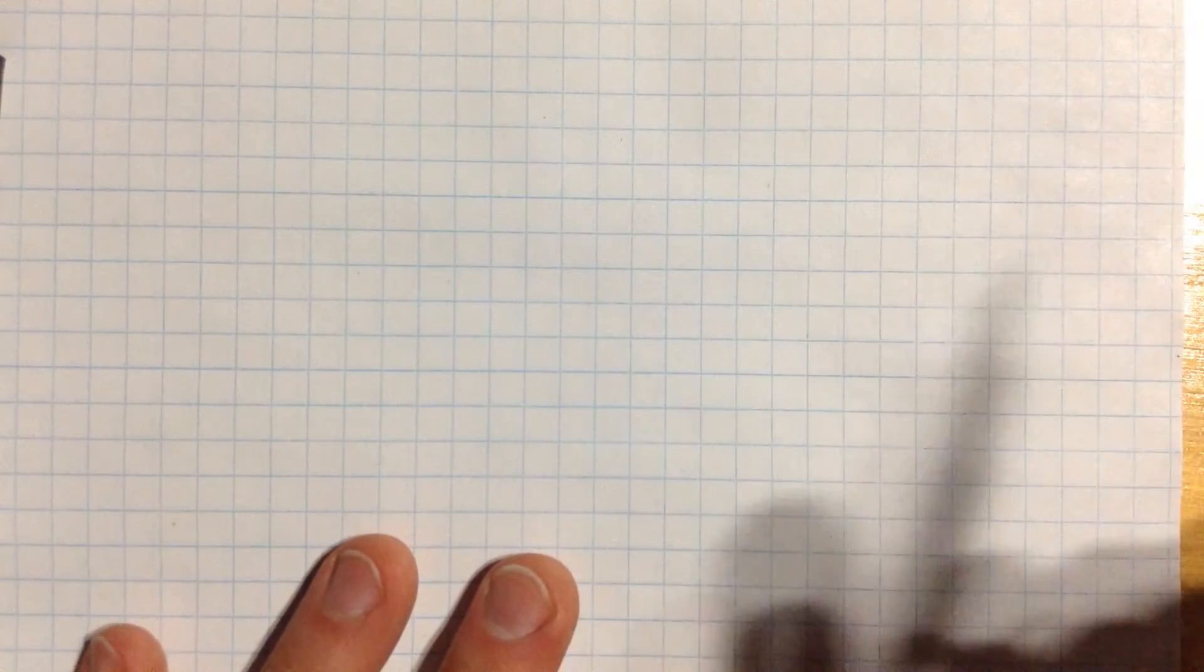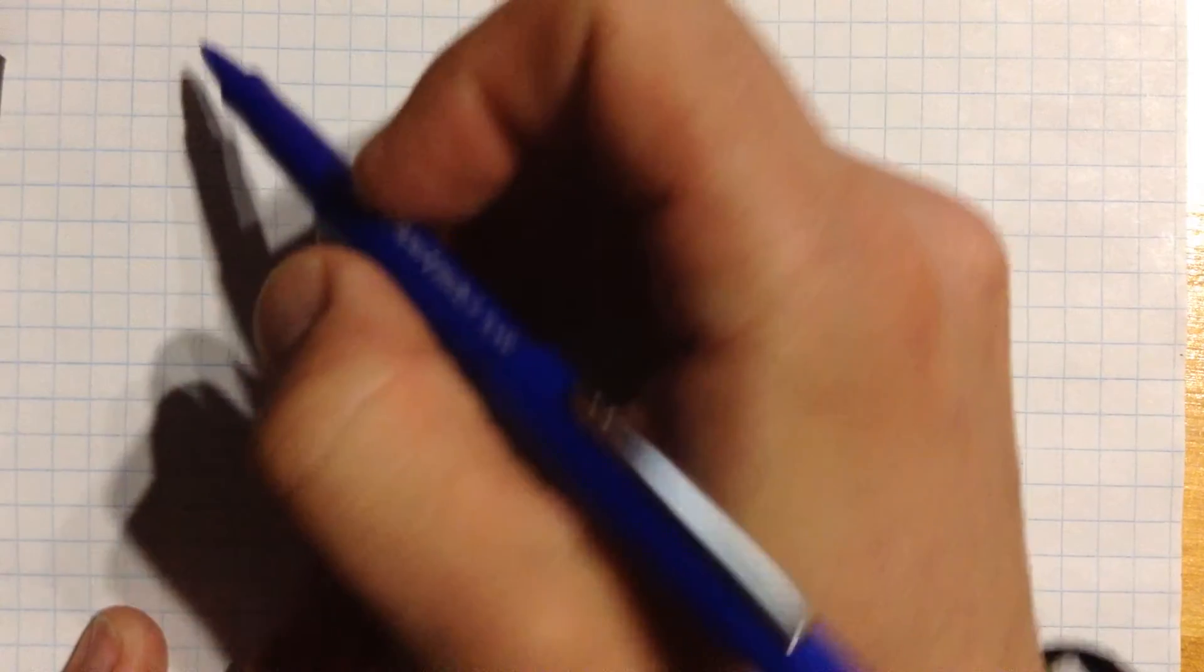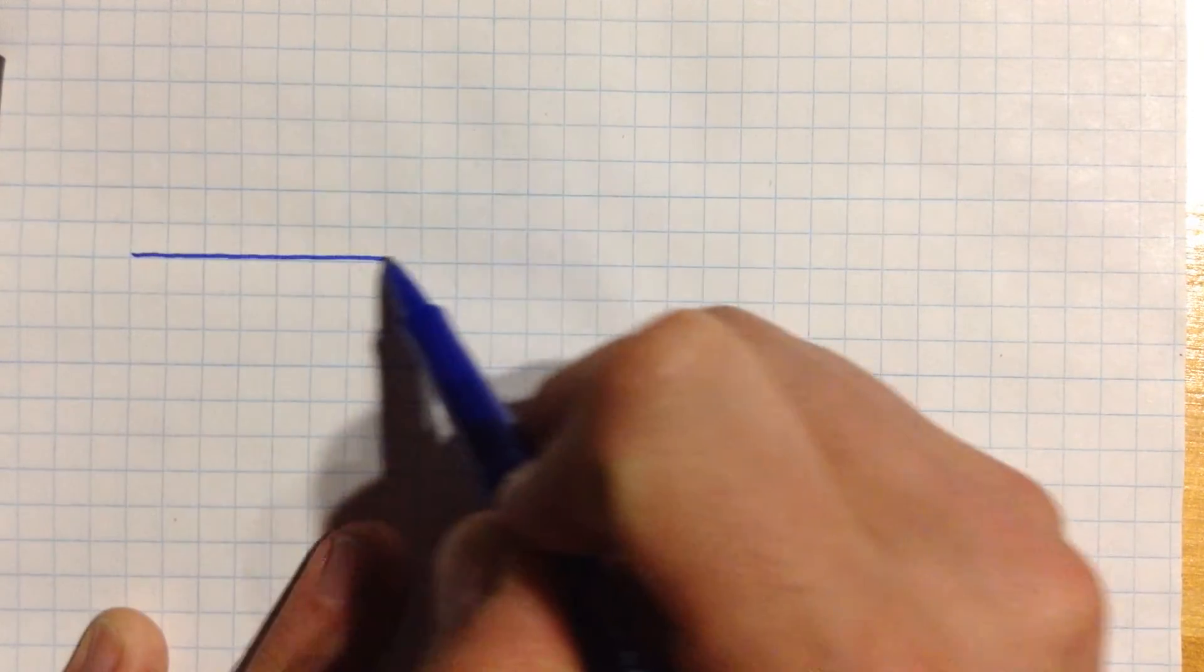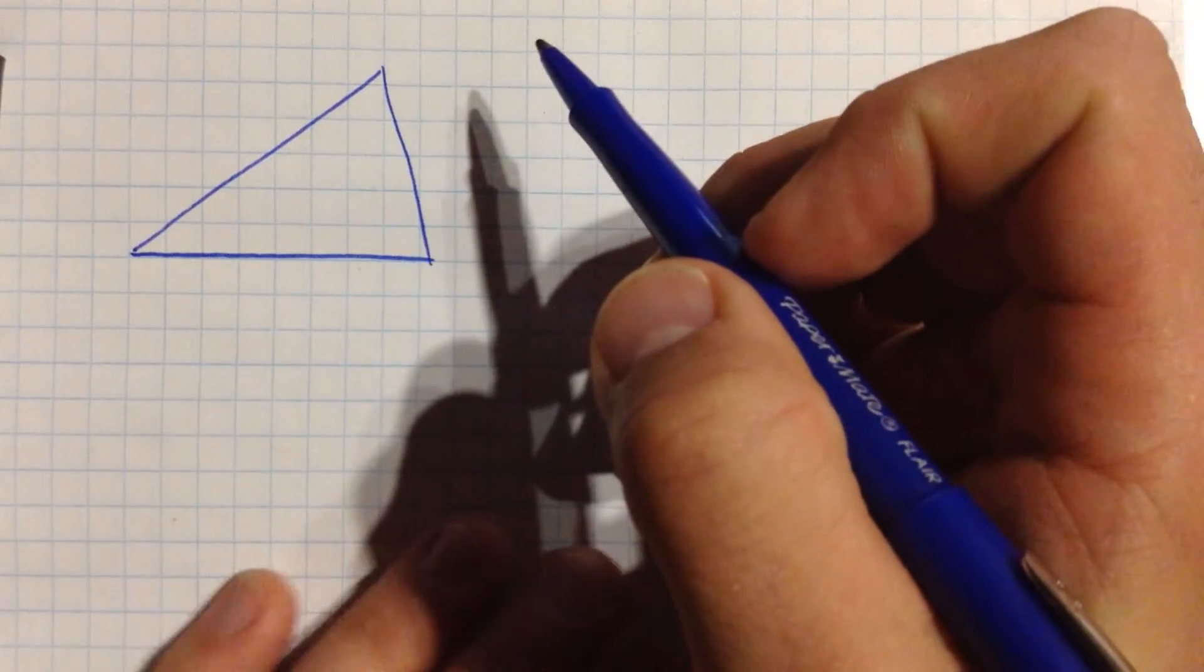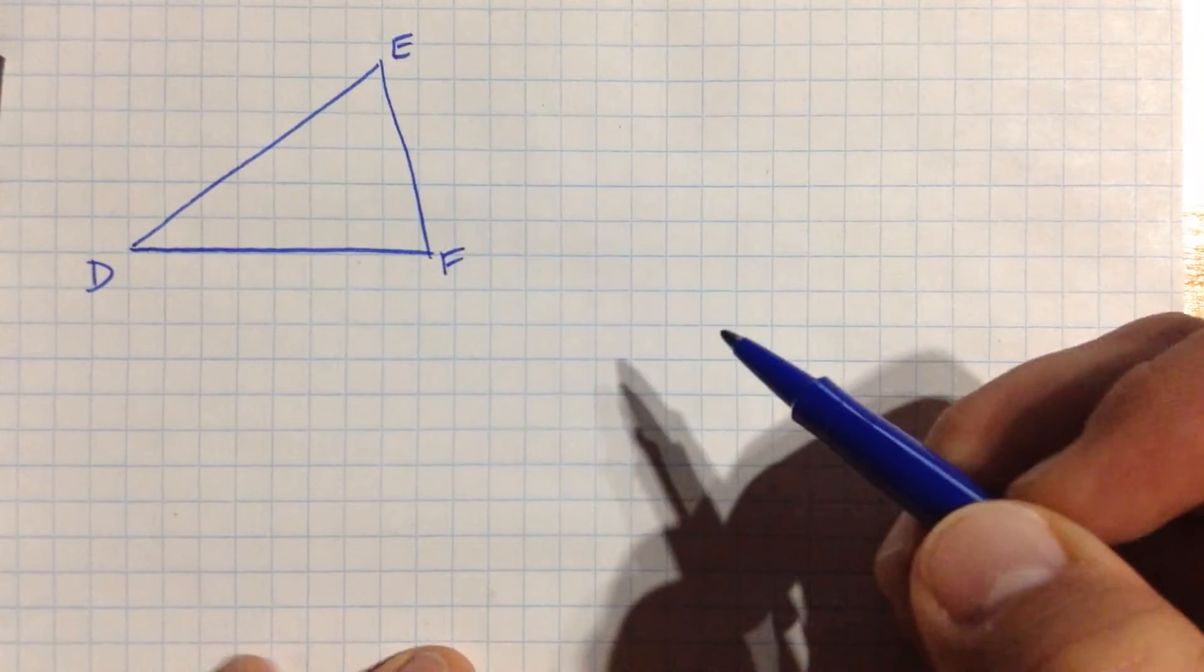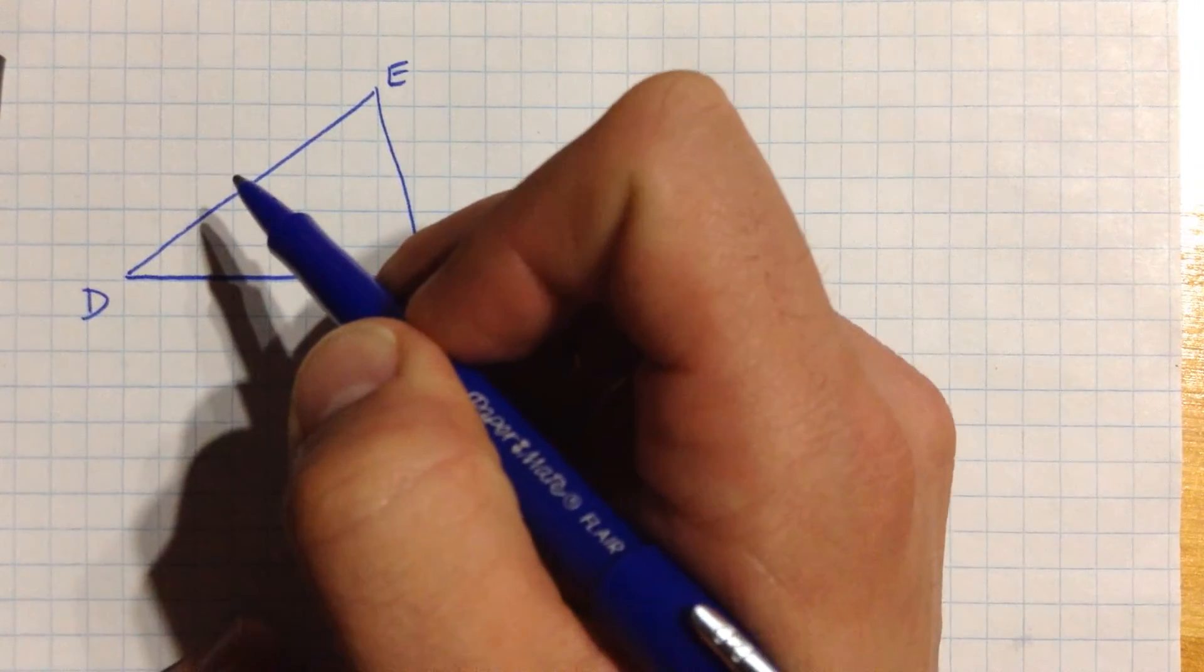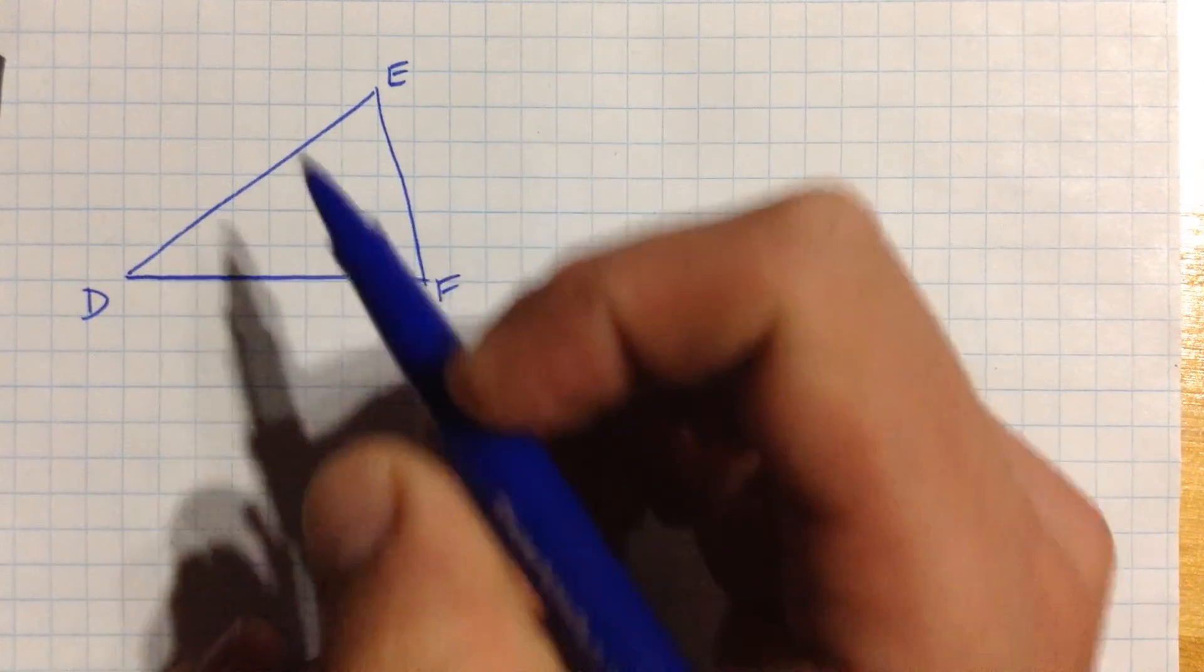And we have another one. So that's one where we knew the two sides and an angle. Let's do a little bit different one here. How about like this? Let's use some different letters. We'll use D, E, and F. And in this case, I want to use two angles and one side.